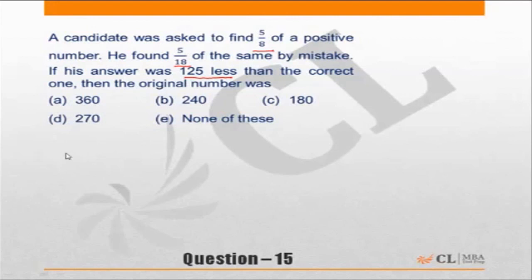Standard method is let the number be x. You are supposed to find 5/8 of x. You found 5/18 of x. This is equal to 125. Now this should tell you that your answer, or the original number, should be a multiple of 8 as well as 18.